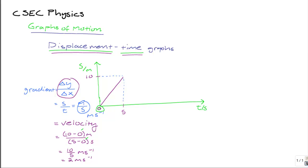Simple as that. So this is an example of a displacement versus time graph. Remember that displacement goes on your y-axis. Time goes on your x-axis. Remember also that the gradient of a displacement versus time graph is equal to the velocity of an object.